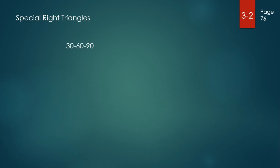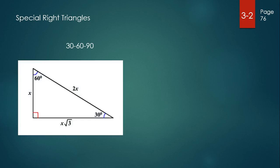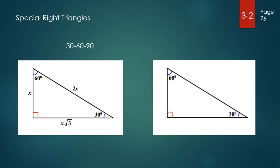The other special right triangle is a 30-60-90 right triangle. In a 30-60-90 triangle, the shortest side is always opposite the 30-degree angle — that side is marked x units long. The hypotenuse will always be twice as long as the shortest side, so it's 2x. The other leg, opposite the 60-degree angle, will always be the length of the shortest side times the square root of three. So if the shortest side is six units long, the hypotenuse is twelve units long, and the side opposite the 60-degree angle is six times the square root of three units long.